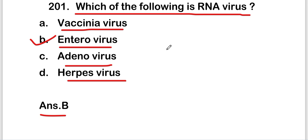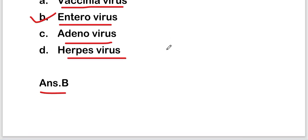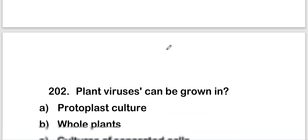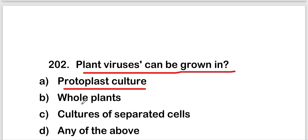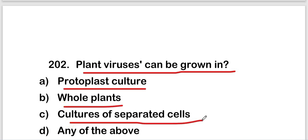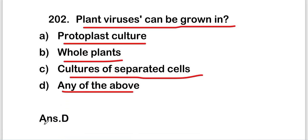The next question is: plant viruses can be grown in protoplast culture, whole plants, culture of separated cells, or any of the above. The right answer is option D, that is any of the above. So plant viruses can be grown in protoplast culture, whole plants, or cultures of separated cells.